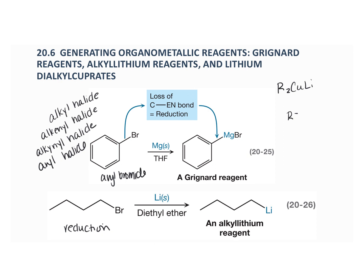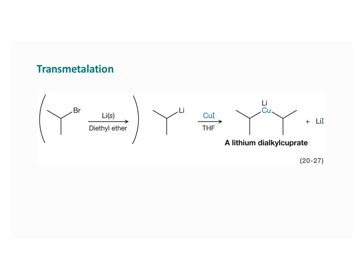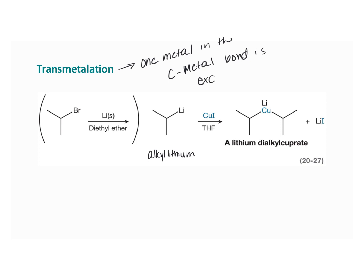Lithium dialkyl cuprates are not generated directly from an alkyl halide, but rather they're produced from the corresponding alkyl lithium species using cuprous iodide, as shown in equation 2027. The conversion of the alkyl lithium species into lithium dialkyl cuprate is a type of transmetallation — one metal in the carbon-metal bond is exchanged for another.